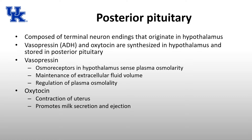The posterior pituitary, although very close to the anterior pituitary, is a very different structure. It's actually composed of terminal neuron endings that start in the hypothalamus and then end in the posterior pituitary. There are two things secreted by the posterior pituitary: vasopressin or ADH and oxytocin. These are synthesized in the hypothalamus, travel down along the neuron, and are stored within vesicles in the posterior pituitary.